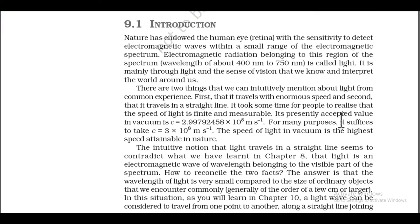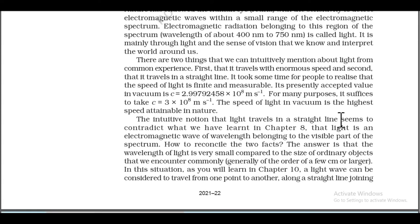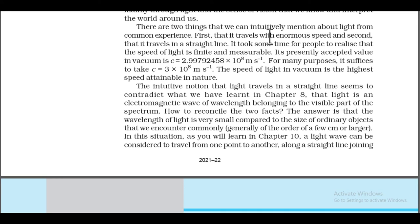There are two things we can intuitively mention about light from common experiences: first, that it travels with enormous speed, and second, that it travels in a straight line. It took some time for people to realize that the speed of light is finite and measurable. Its presently accepted value in vacuum is c = 2.99792458 × 10⁸ m/s. For many purposes it suffices to take c = 3 × 10⁸ m/s. The speed of light in vacuum is the highest speed attainable in nature.